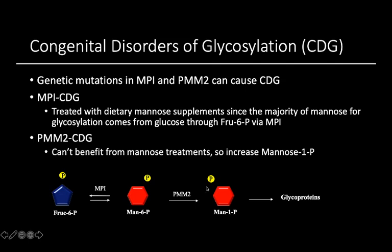Instead, there are current studies that are aiming to increase mannose-1-phosphate levels in cells instead of trying to increase this mannose-6-phosphate. So then, if we have more mannose-1-phosphate, that should be able to benefit glycoprotein production.